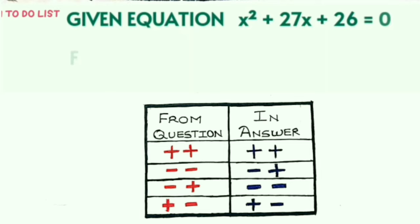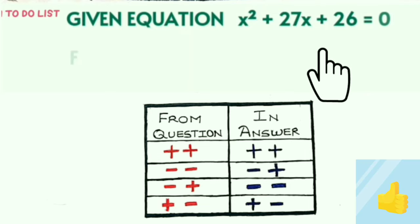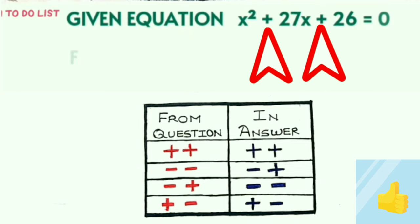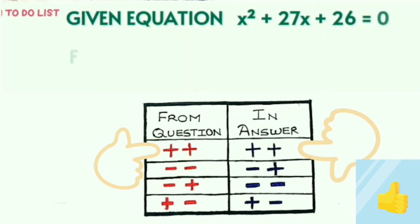Let's understand with the first equation: x squared plus 27x plus 26 equals 0. This equation has plus-plus signs. Looking at the table, the signs corresponding to plus-plus in the 'from question' column are also plus-plus in the 'answer' column. So the factors of 26 will carry plus-plus signs, which is exactly what we applied when we solved it.